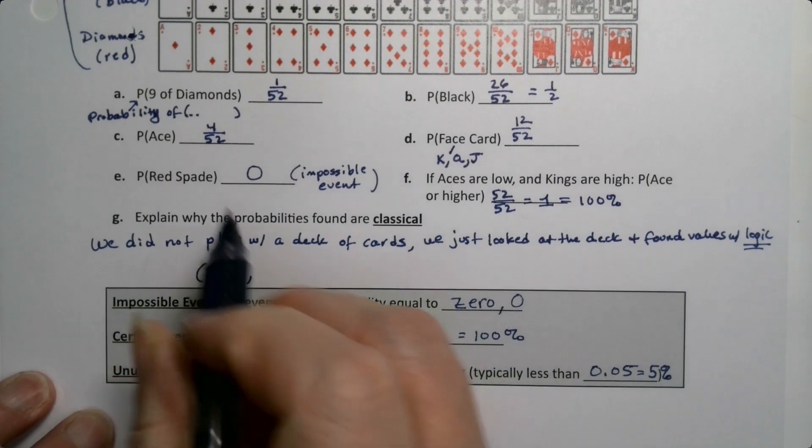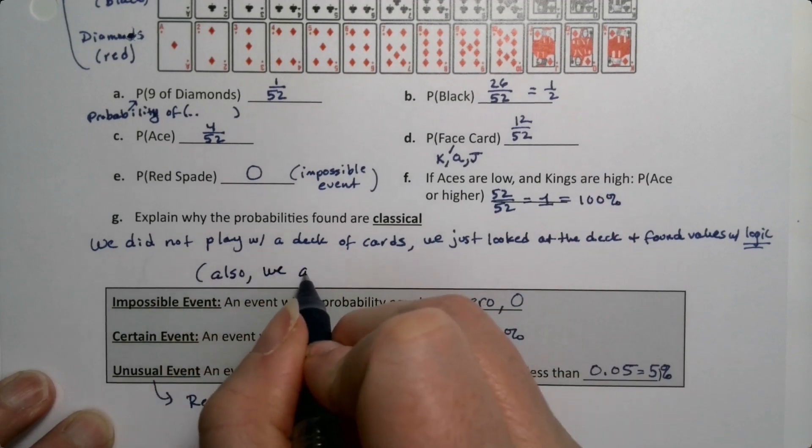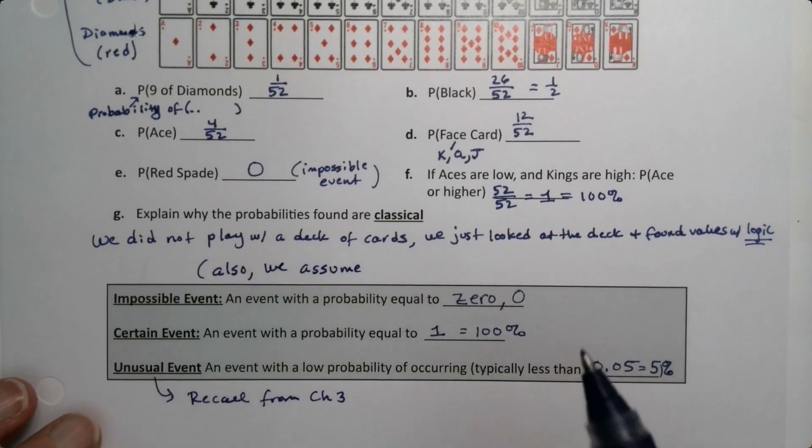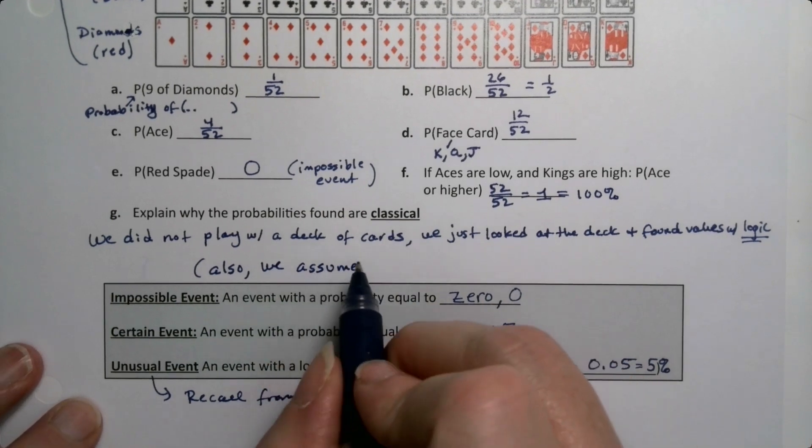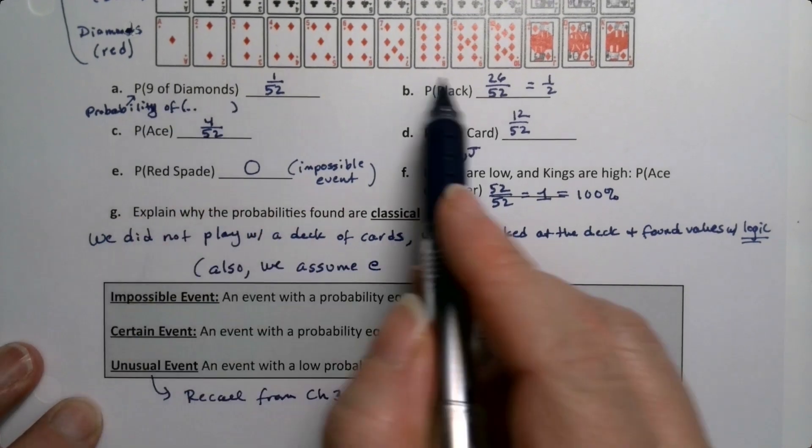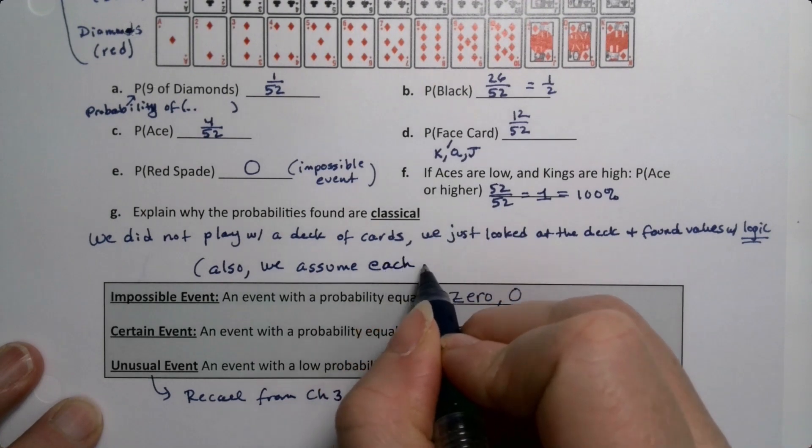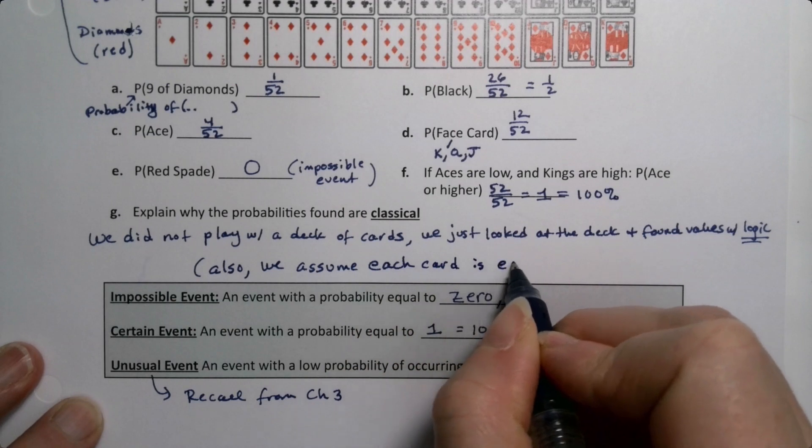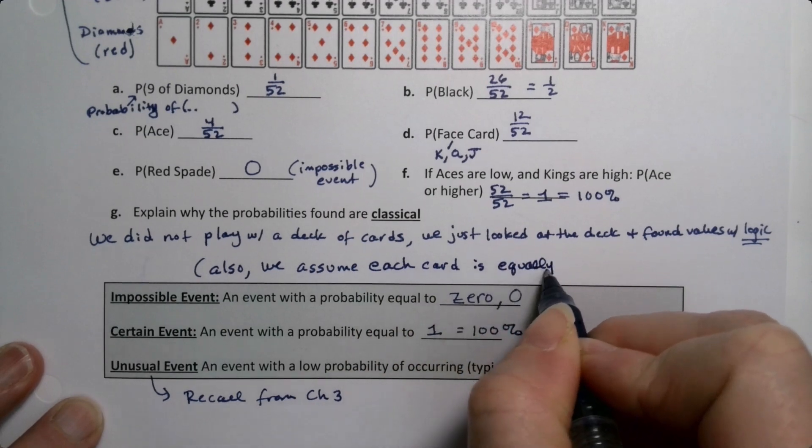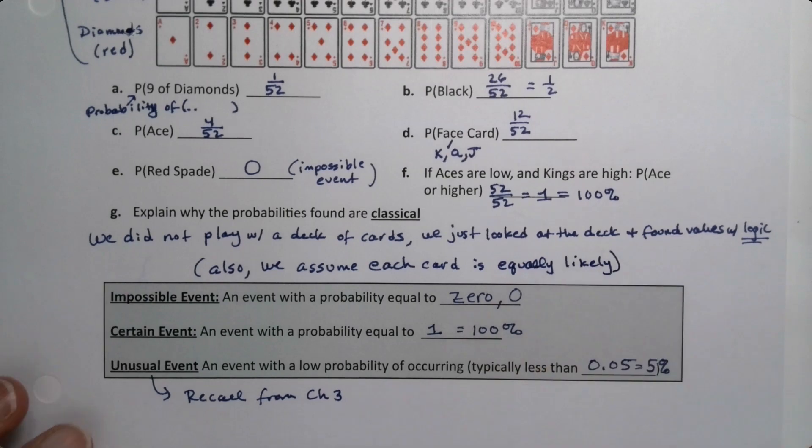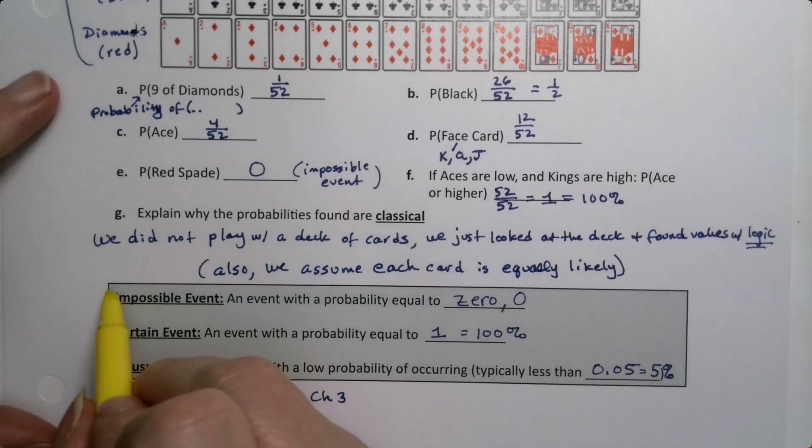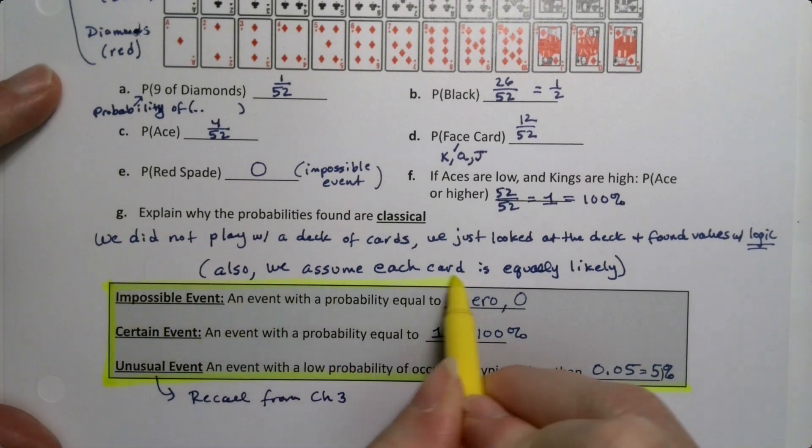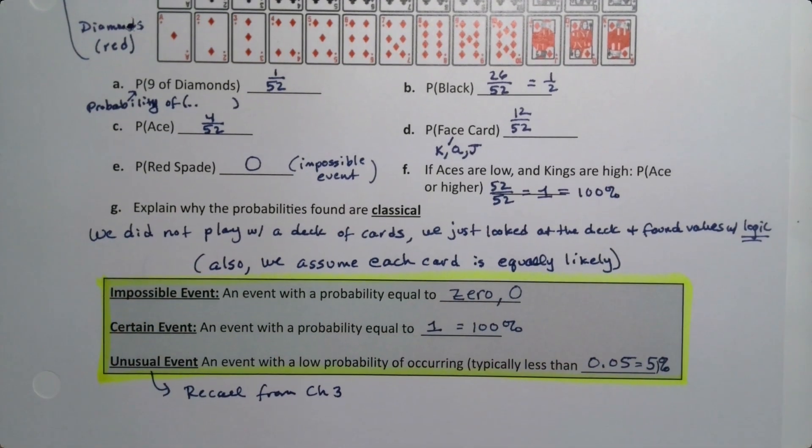We looked at the deck and kind of imagined how it would be. That's logic. We did not play with the deck of cards, we just looked at the deck and found the values with logic. Also, just on a side note, we assumed that every card was equally likely, which is a classic piece of classical probabilities. That you assume that each simple outcome is equally likely. These definitions down here will be ones that you'll run into many, many times.